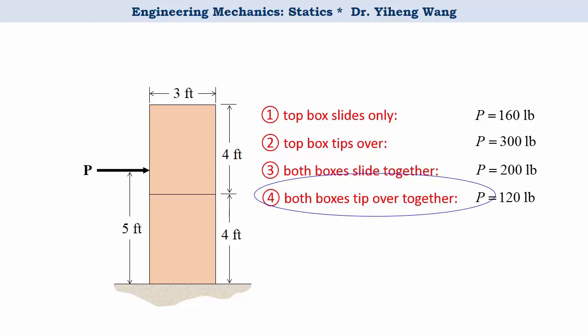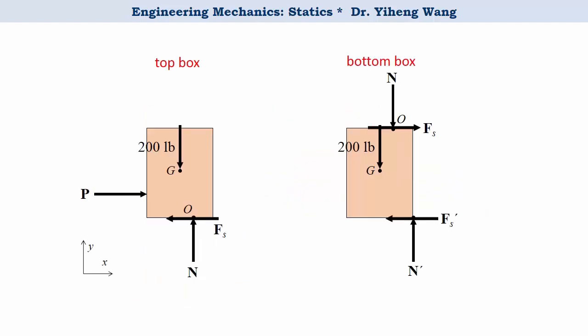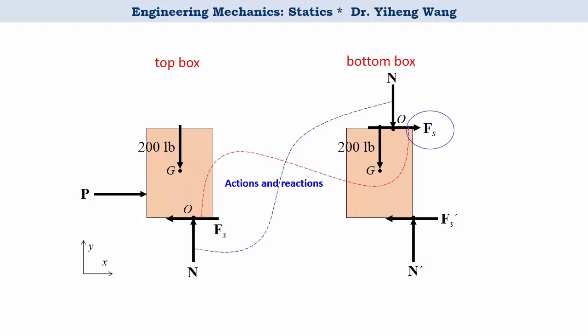If you're wondering why the bottom box moves — after all, the force P is applied to the top box — the answer lies in the free body diagrams of the two boxes drawn separately. There will be normal forces and frictional forces between the two boxes, and by Newton's third law they are action-reaction pairs: same magnitude, same point of application, opposite directions. Therefore, it is the frictional force exerted by the top box onto the bottom box that gives the bottom box a tendency to move to the right.